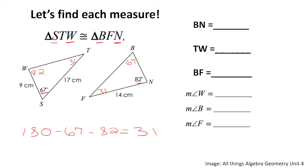Looking at the 17-centimeter side, that is side TS. From our congruency statement, side TS is congruent to side BF, so side BF is also 17 centimeters. The 9-centimeter side is side WS — the first and third letters of the first triangle — so the congruent side BN is 9 centimeters.